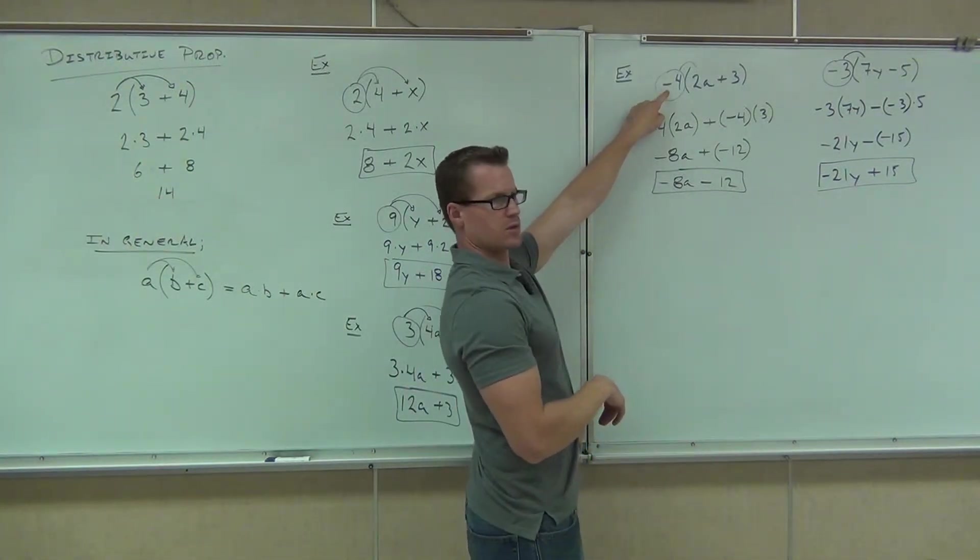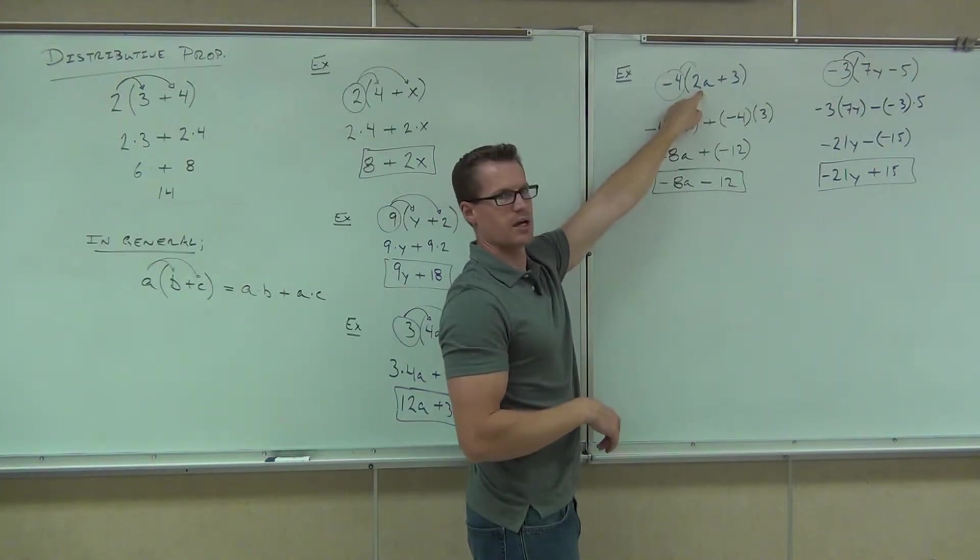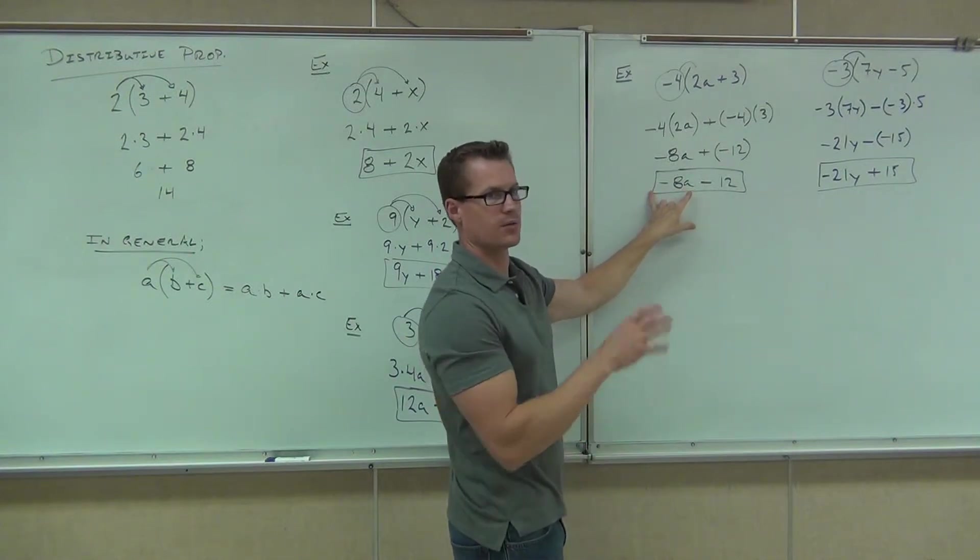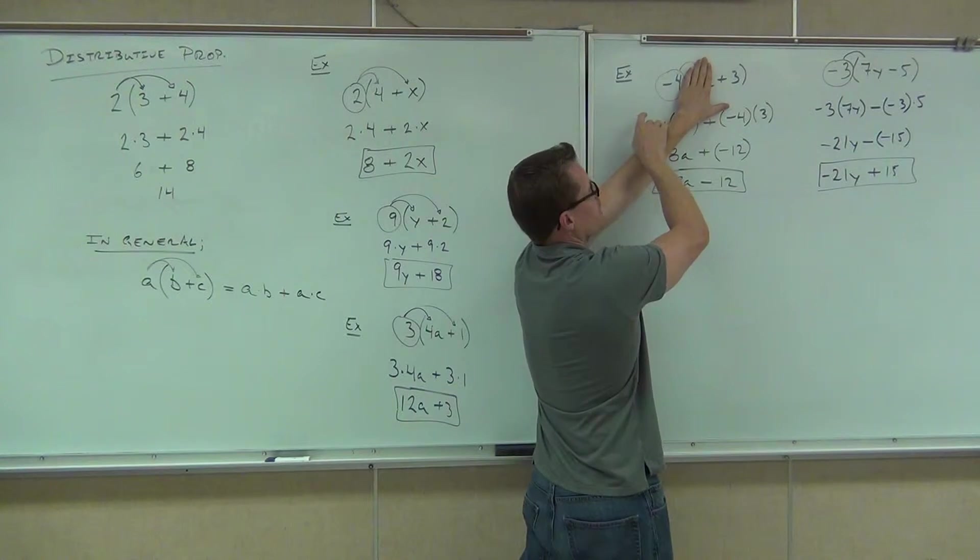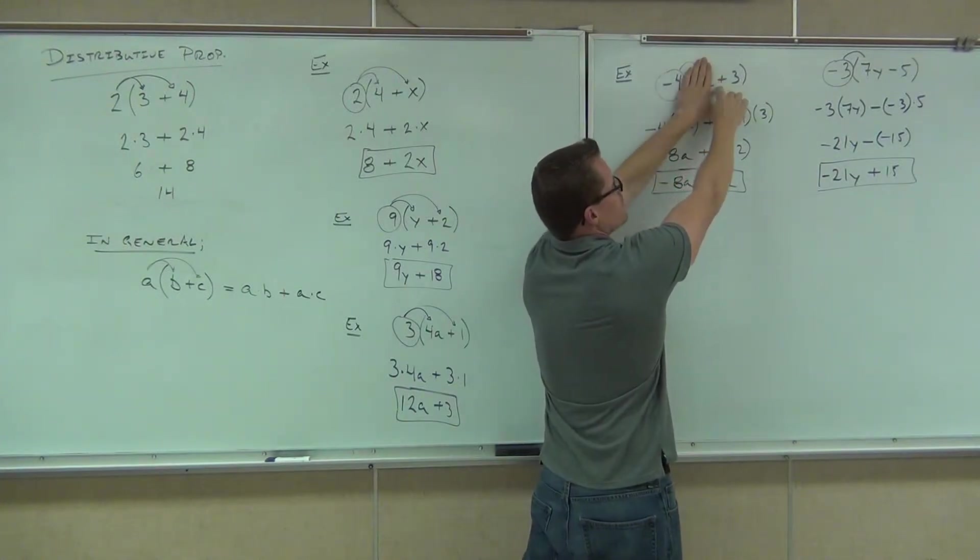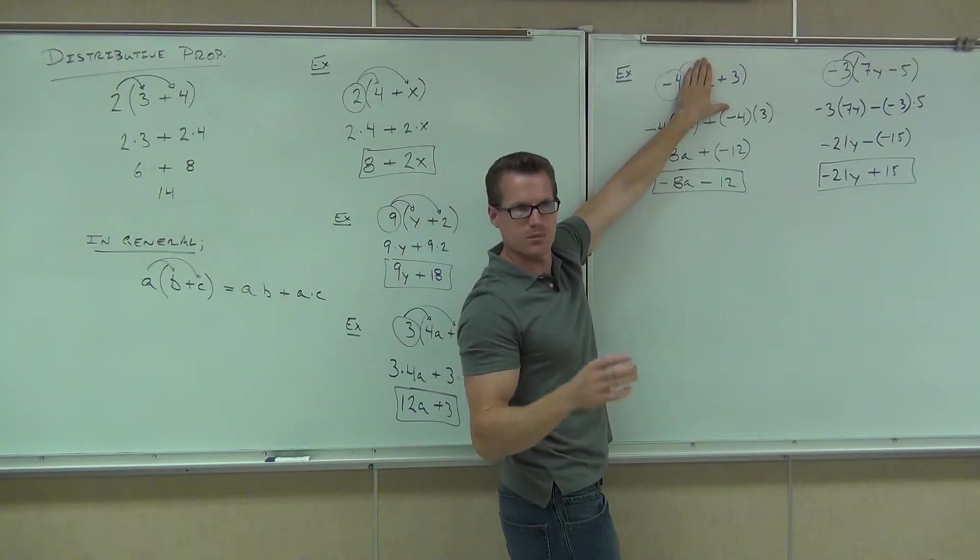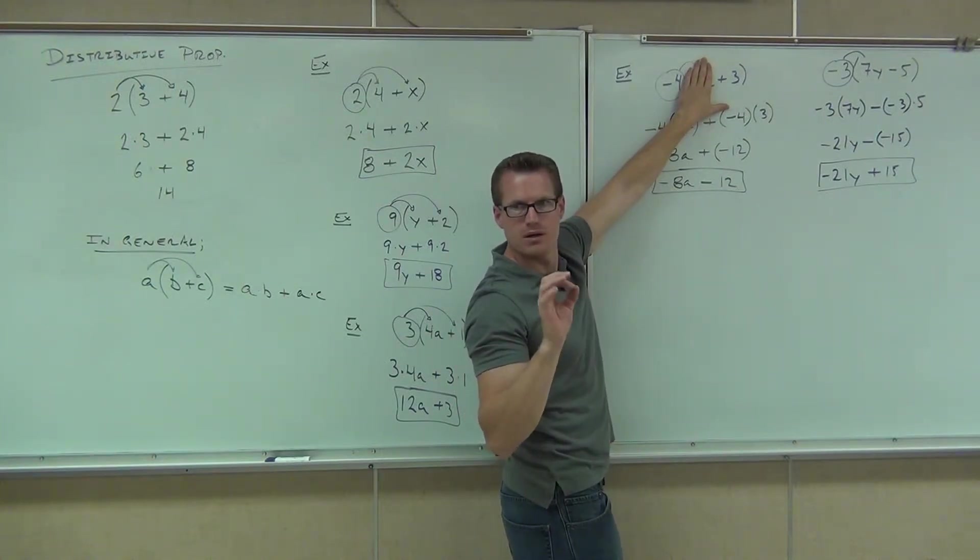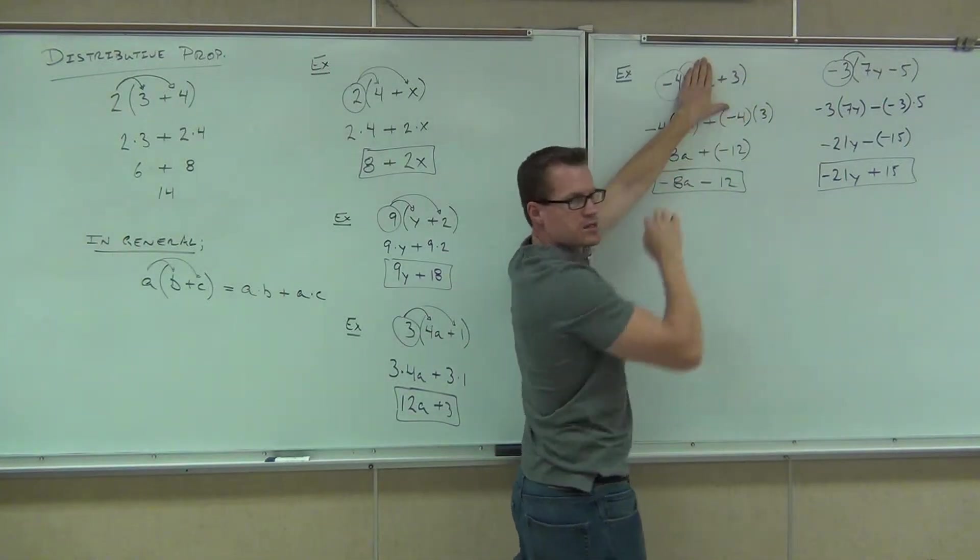This is negative 4, true? This is positive 2A. What's negative 4 times positive 2A? Negative 8A. That's exactly what we have here. Now, this is the important one. What's negative 4? Ignore this for a second. What's negative 4 times? We're going to consider this to be not plus 3, but positive 3. Remember how we did that a while back? We kind of tricked the problem a little bit.